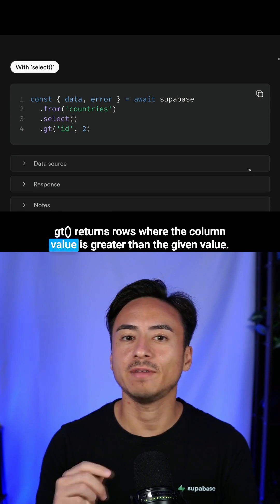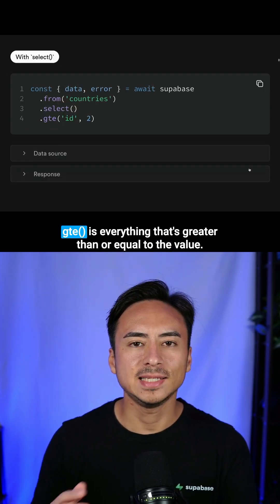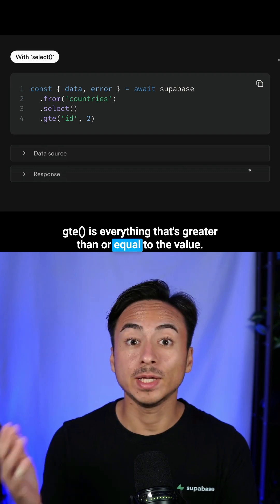GT returns rows where the column value is greater than the given value. GTE is everything that's greater than or equal to the value.